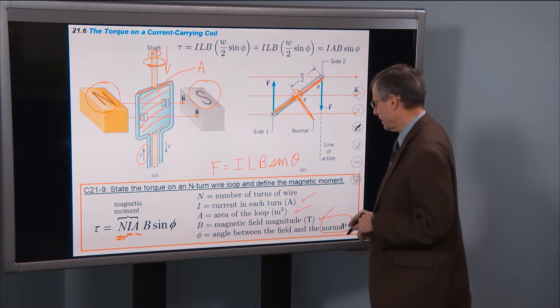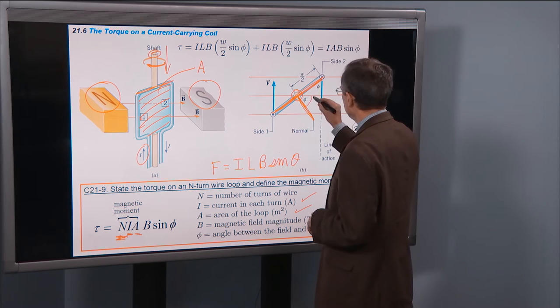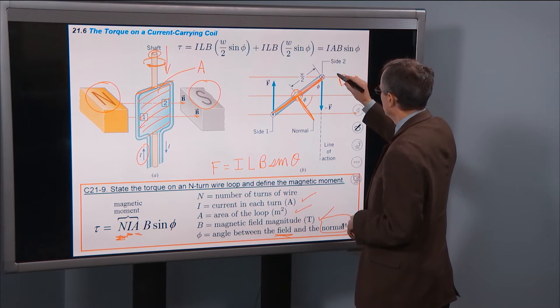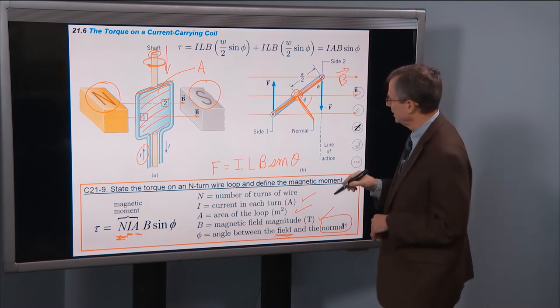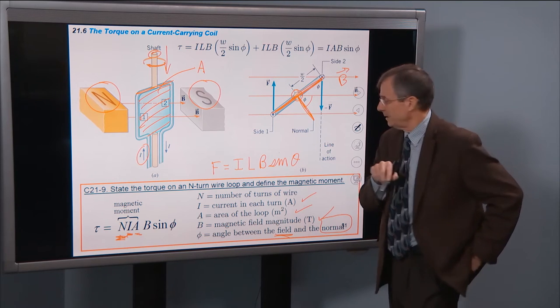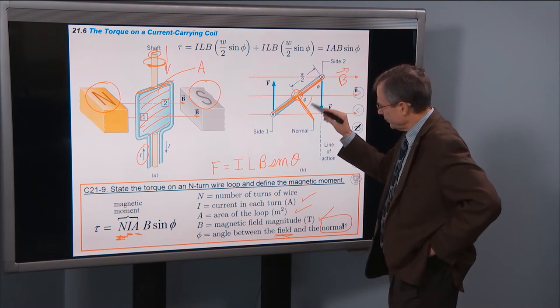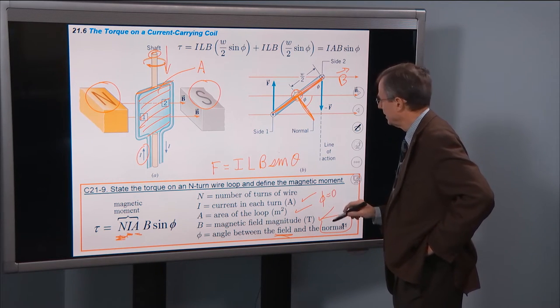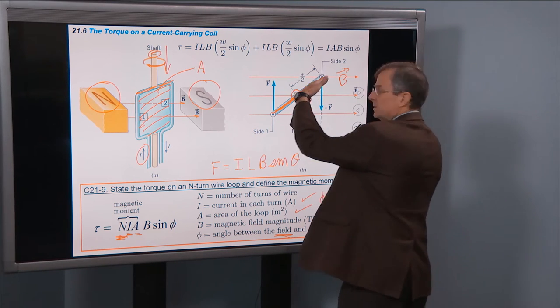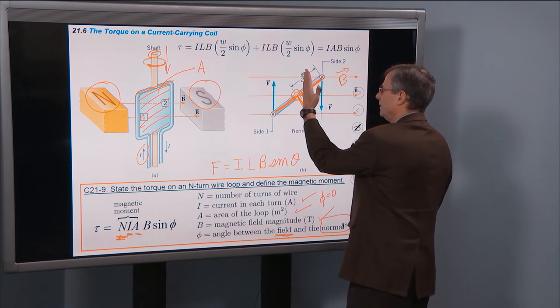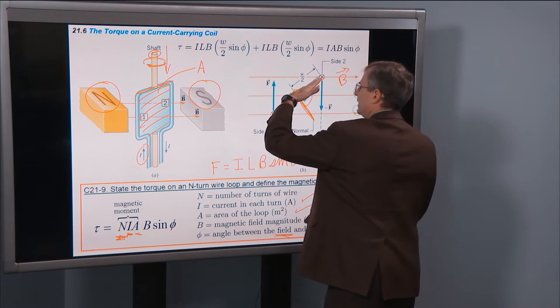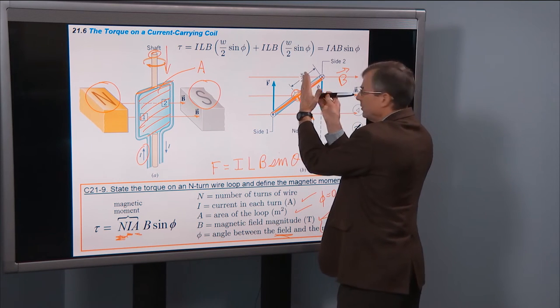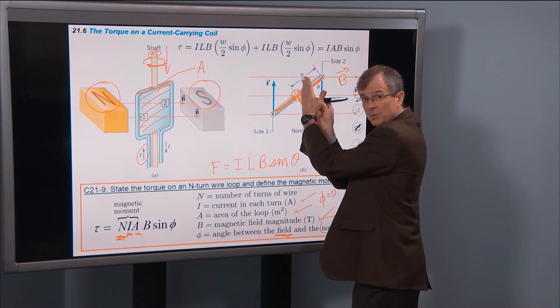And the angle Φ that's pertinent here is the angle between that normal and the field, magnetic field B, which is denoted here by red arrows. So the important point here is that if Φ is equal to 0, then this coil is oriented like this. So if the coil's here, then the normal, pointing perpendicular to it, is in the direction of the magnetic field. And that would be the case where Φ equals 0.